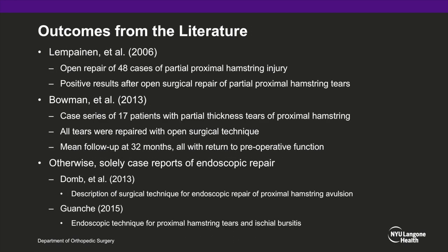There is a paucity of data in the current literature regarding partial proximal hamstring repair and clinical outcomes. A study from 2006 reported positive results after open repair of 48 cases of partial proximal hamstring injury. Additionally, in 2013, a case series of 17 patients with partial thickness tears were repaired with an open surgical technique, and at a mean follow-up of 32 months, all returned to preoperative function. There are solely case reports regarding endoscopic repair, which has emerged as a viable treatment option.